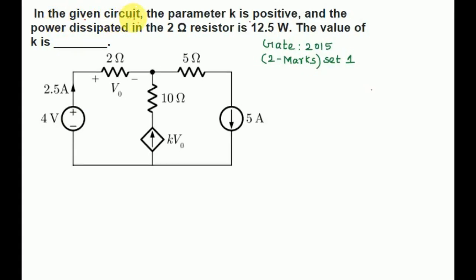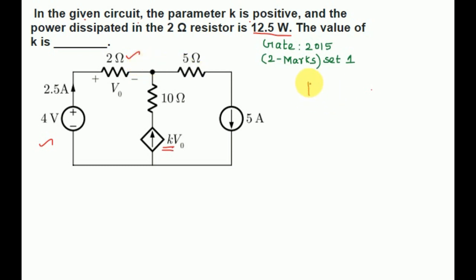In the given circuit, the parameter k is positive and the power dissipated in the 2 ohm resistor is 12.5 watts. The value of k is to be found. This circuit diagram is given, and in this circuit diagram this is the only 2 ohm resistor. So we can write: power dissipated by this 2 ohm resistor is 12.5 watts, which is given.